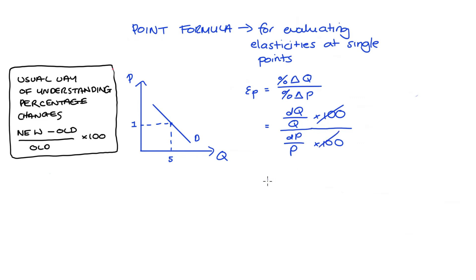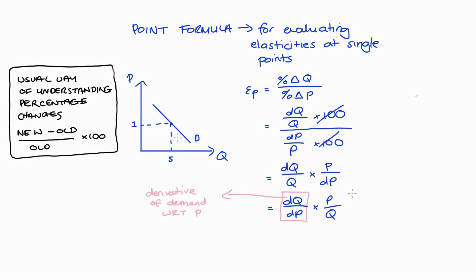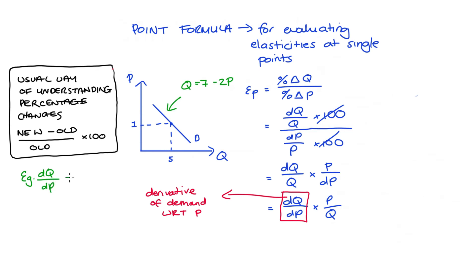We can do the same rearranging trick as with arc elasticity and get dQ over Q times P over dP, which rearranges to dQ over dP times P over Q. Note that dQ over dP is just the derivative of our demand function with respect to price. So if the demand function is Q equals 7 minus 2P, then dQ/dP would be negative 2.